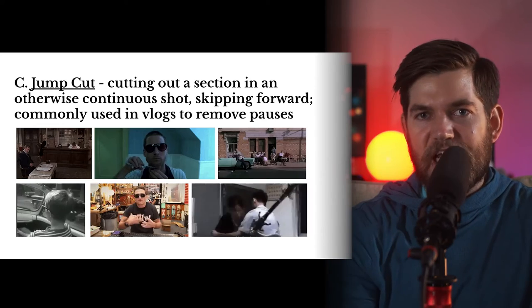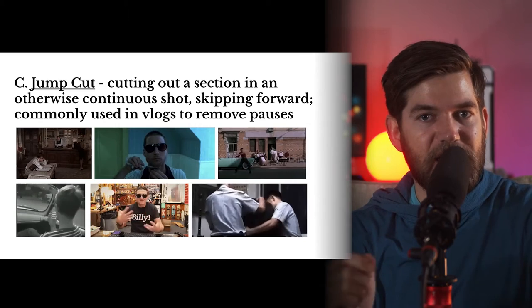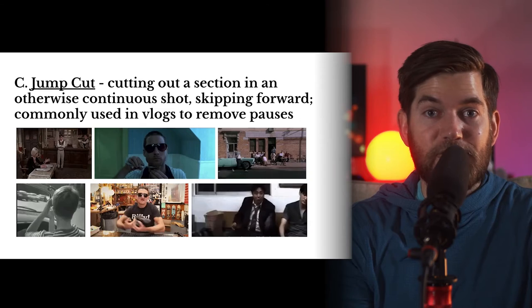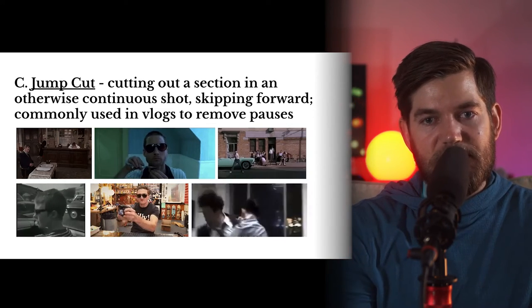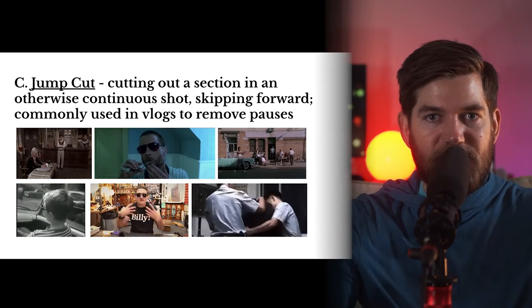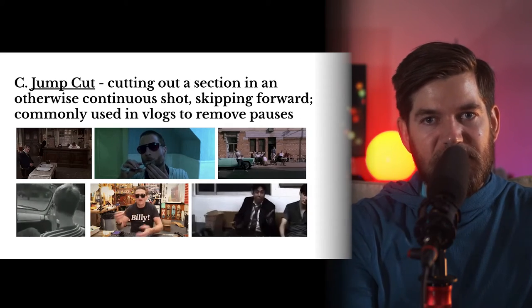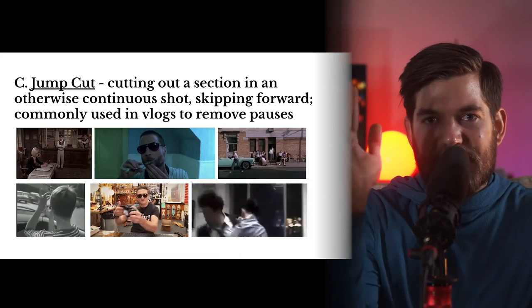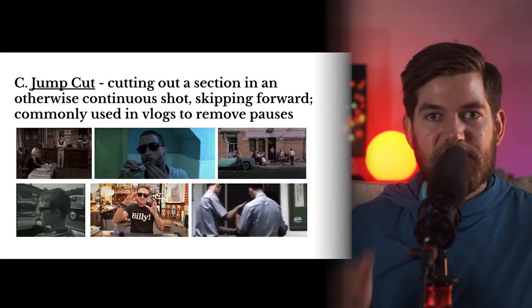Our next example is the jump cut. Pay special attention because many people, even people in Hollywood, use this term incorrectly. A jump cut is something you've seen a lot in YouTube videos. Jump cutting is when you cut out a section in a continuous shot — if you hadn't made the cut, the shot would have kept going continuously. You take out something in the middle and there's a little skip. This is not as big as an elliptical edit to a new location; it's a small skip inside of a single shot. I'm using jump cuts all the time to cut out pauses, ums, uhs, and when I look at my notes.